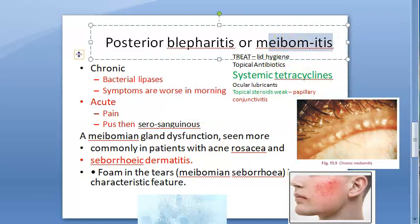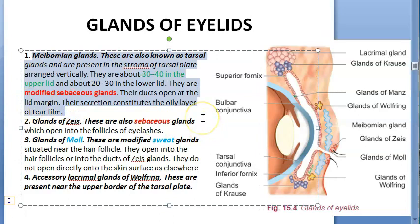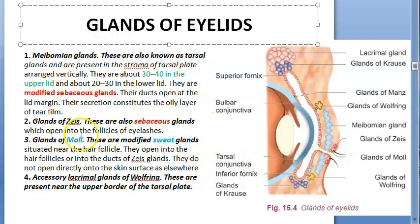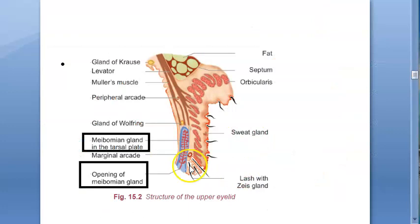Meibomitis is a type of blepharitis. What we are discussing here is chalazion, which is called the meibomian cyst. You should understand the difference: meibomitis is when all ducts are clogged at the lid margin, whereas a meibomian cyst (chalazion) is when one duct is blocked and secretions accumulate inside that individual gland.